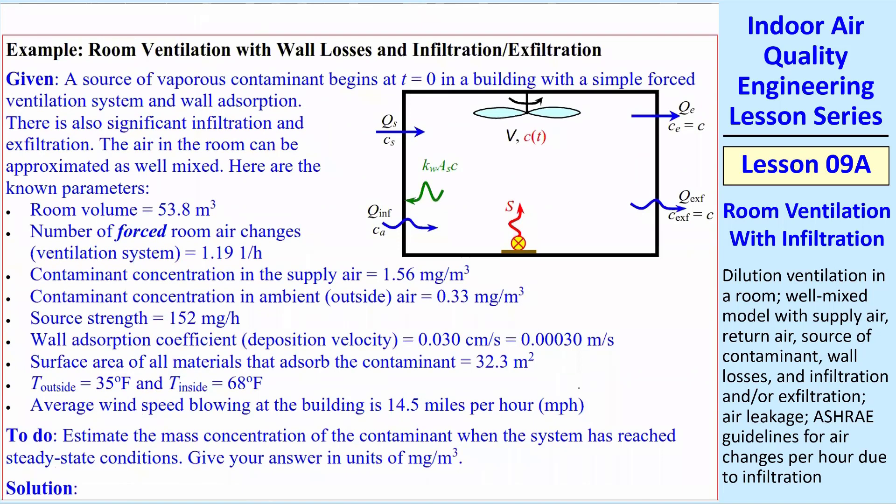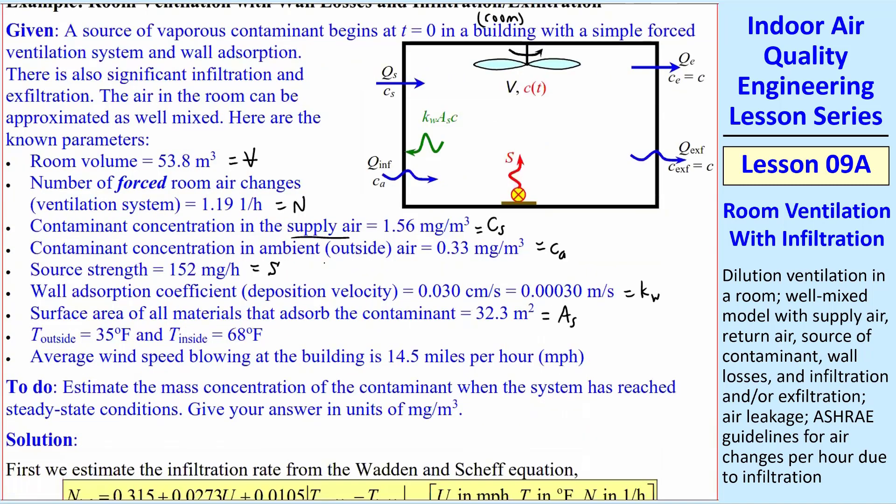So let's do one example. Very similar to a previous example we had, except now I've added infiltration and exfiltration. We have our parameters. So let's just identify these: room volume, V; number of forced room air changes, this is what we just call N through the ventilation system; the contaminant concentration in the supply air; outside ambient air; the source strength; the wall adsorption coefficient; the surface area of materials that adsorb; T outside and T inside; and the average wind speed is U in miles per hour.